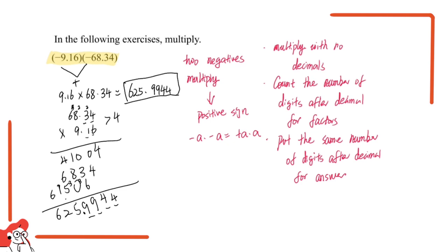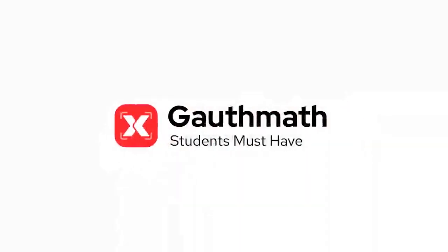What you can take away from this question is how to do decimal multiplication. Step one: multiply with no decimals. Step two: count the number of digits after the decimal place for the factors. Step three: put the same number of digits after the decimal for the answer. Also remember: multiplying two negative signs gives a positive sign. That's all for this question — see you in the next video, thank you!